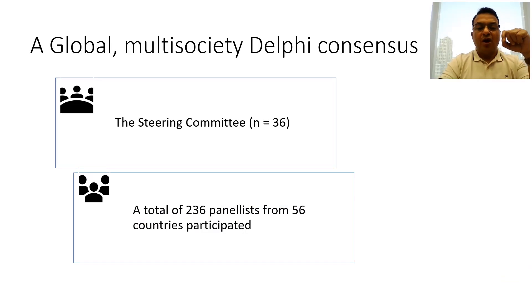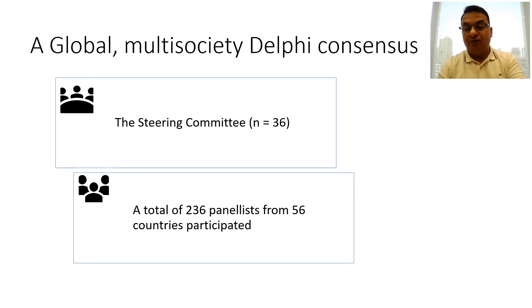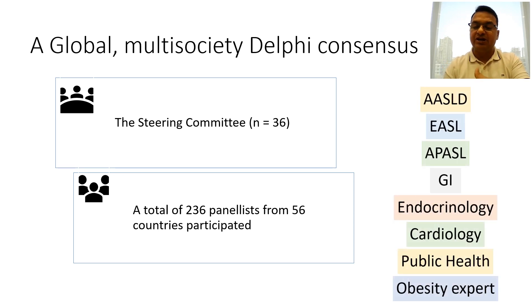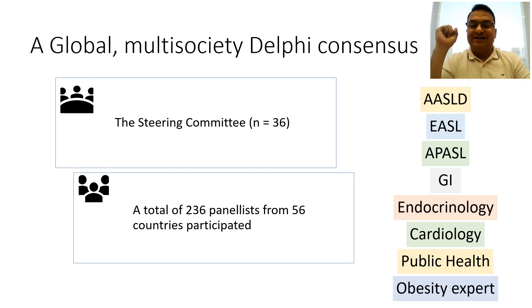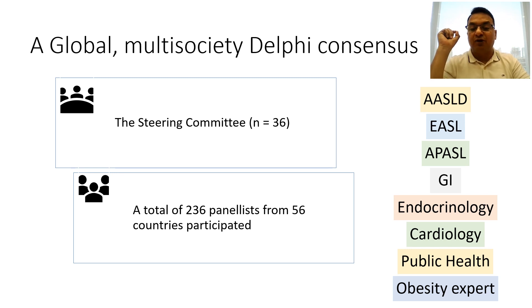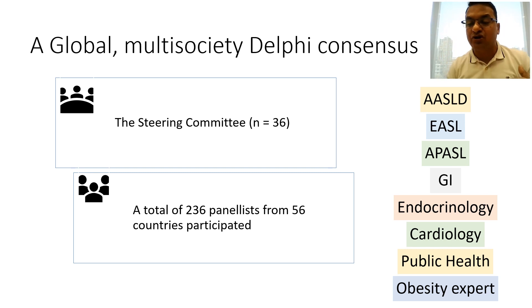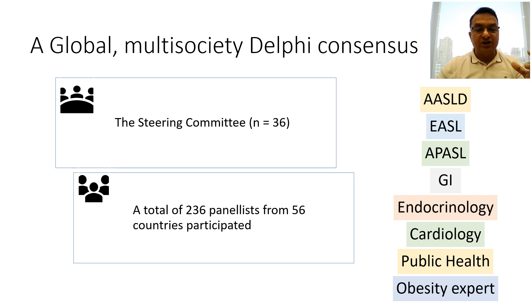So what happened as a result? A global steering committee comprising 36 experts from various societies including AASLD, EASL, and APASL was formed to undertake a global consensus through Delphi methodology. They had a panel of 236 experts from 56 countries, inclusive of various specialties like hepatology, gastroenterology, endocrinology, cardiology, public sector representatives, and obesity experts — all participating in this Delphi consensus statement procedure.